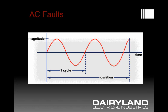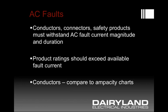Here you can see in this graph the periodic basis of this AC waveform, where one cycle is a complete positive and negative half cycle. The duration of a fault is defined as the length of that event, either in milliseconds or in cycles. AC faults result in heavy current flow, so all of the current conduction path must be able to withstand that AC fault current — including conductors, connectors, and bonds to pipelines. Products used for protection must have ratings that exceed the available fault current in order for them not to fail under those conditions.